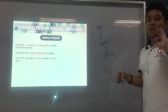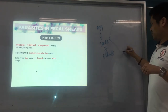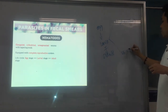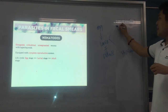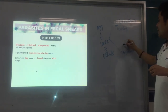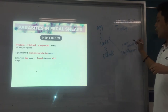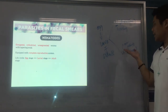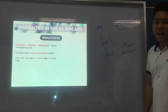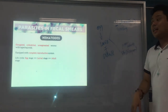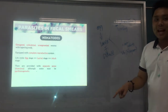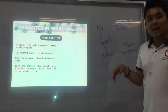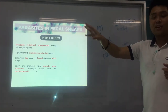Your larva has types. Most worms have the L1, or rhabditiform larva. Nematodes are provided with separate sexes — meaning there is one male worm and one female worm. They are separate.